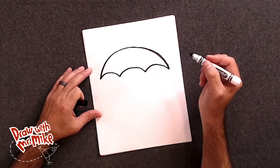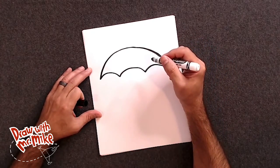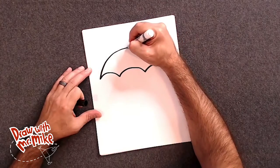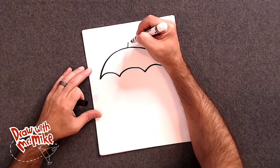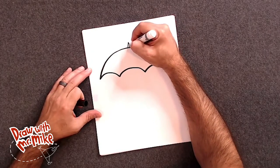All right. Next, we're going to use two lines. One will go up at an angle and the other will come down at an angle.